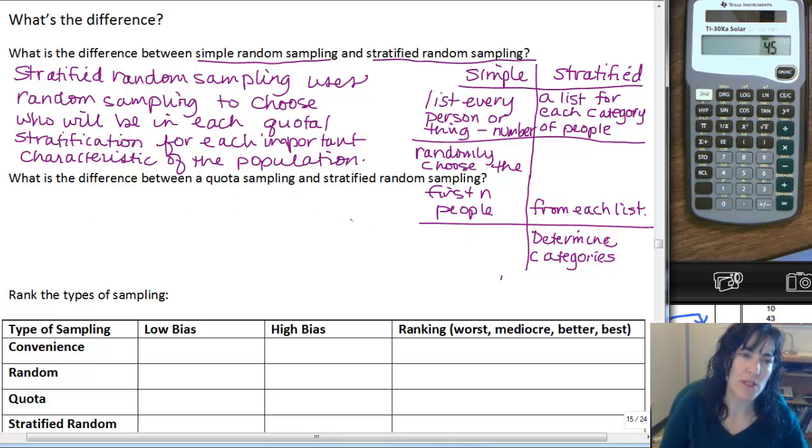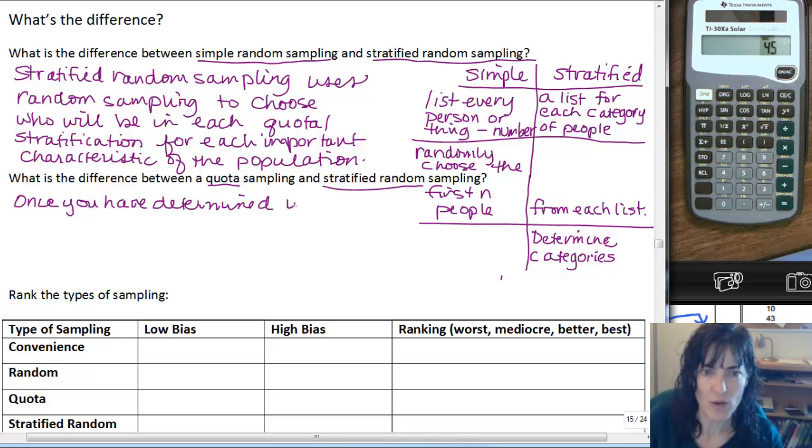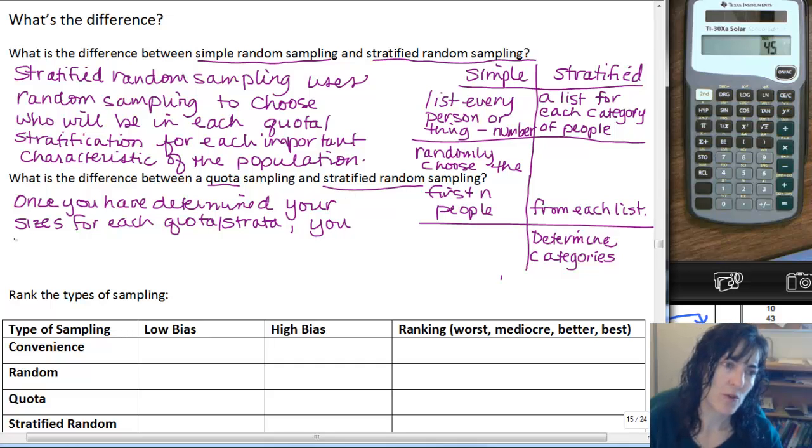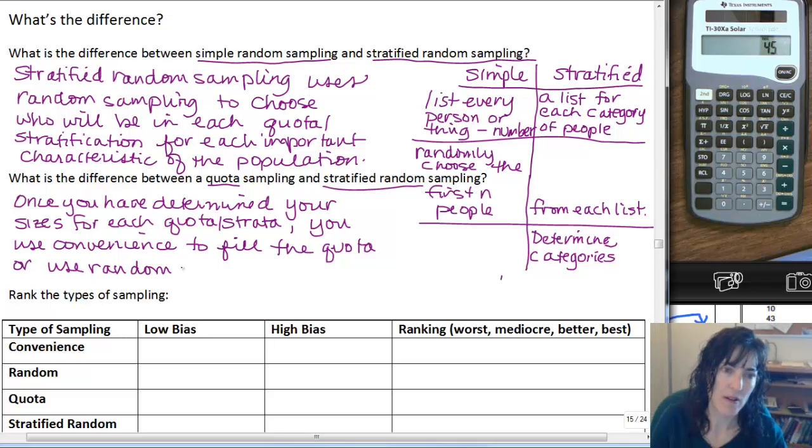So the big difference here, the difference between quota sampling and stratified random sampling, is because once you have determined your sizes for each quota or strata, you use convenience to fill the quota or use random sampling to fill the strata.